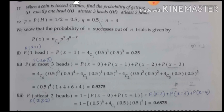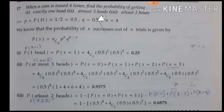Since they have not directly given P and Q, we need to find them. When we toss a coin, the probability of getting a head is 1/2, so P equals 0.5. Q is 1 minus P, which is also 1/2 or 0.5. Now write the binomial distribution formula: P(X) = NCX × P^X × Q^(N-X).